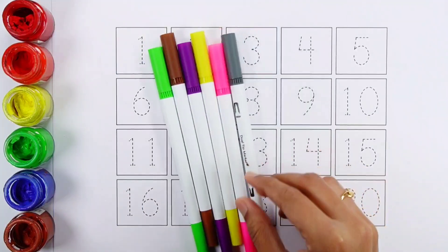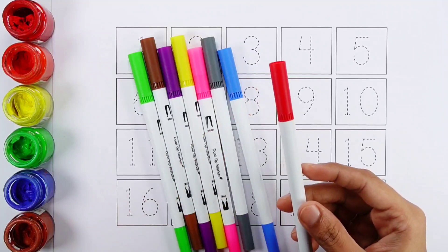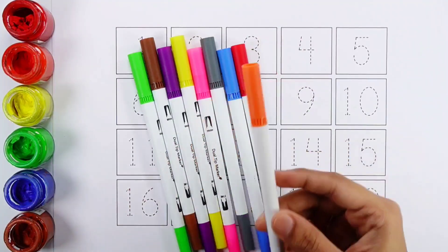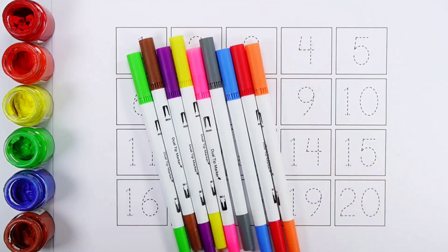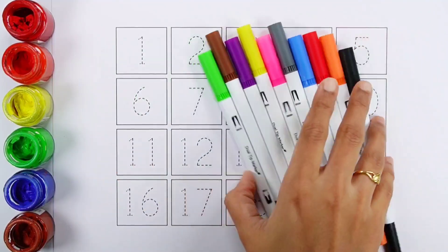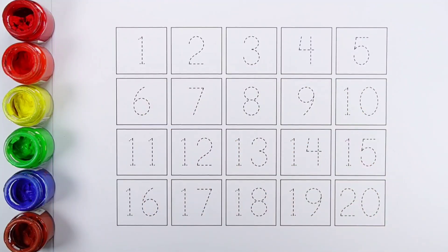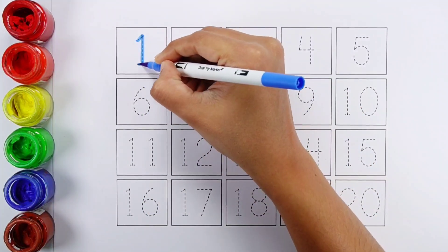Gray color, blue color, red color, orange color, black color. Let's learn to write some numbers. One.